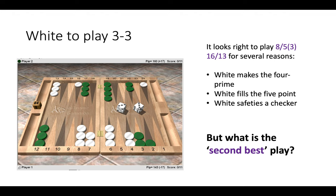Here it looks right to play 8 to 5 with three checkers, 16 to 13, for a number of reasons. White makes a four-prime. White fills four five points, which is usually a good idea. And white also safeties a checker in the outfield. So this play does three really good things over the board.